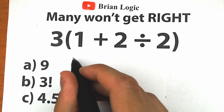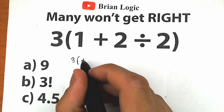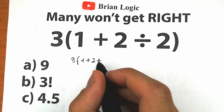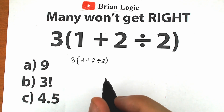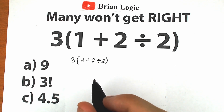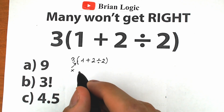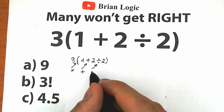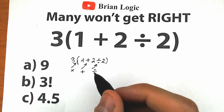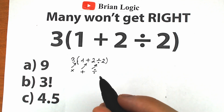So we have 3, and inside parentheses we have — what do we have right here? We have 1 plus 2 divided by 2. And a lot of students might be saying, 'Hey mister, this is the easiest challenge I've ever seen.' We have addition, we have multiplication, we have division — and it's all okay. We have mathematical operations everyone learned in third grade. So that's fantastic.